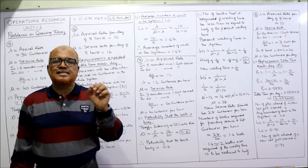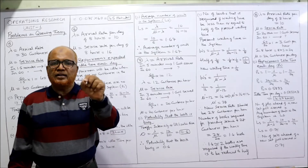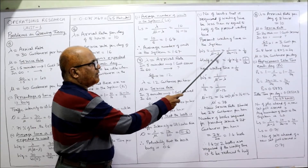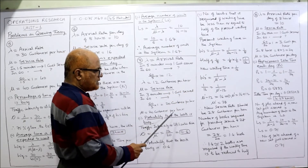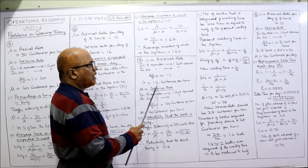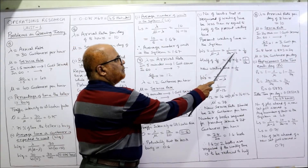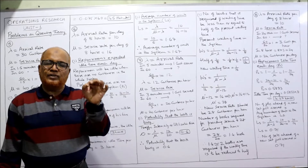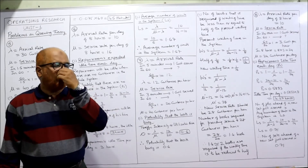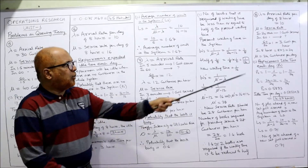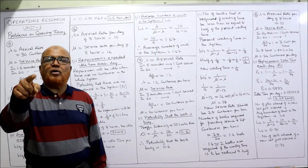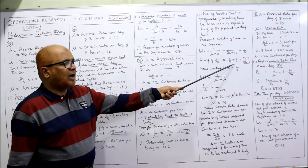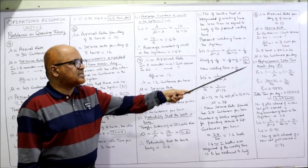Present waiting time Ws = 1 divided by (mu minus lambda) = 1 divided by (20 minus 12) = 1/8 hour. They want to halve it, so the new waiting time = 1/8 into 1/2 = 1/16 hour.